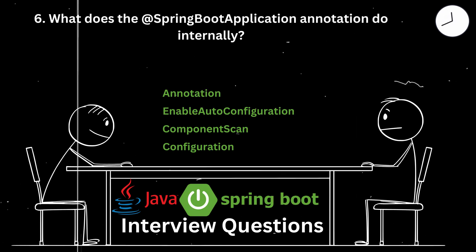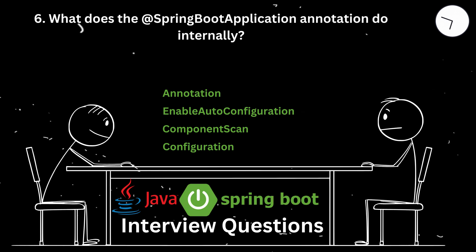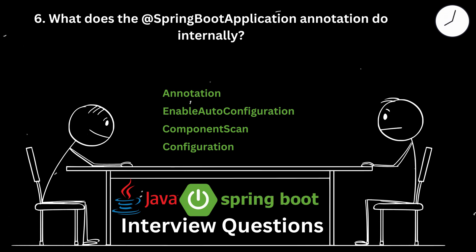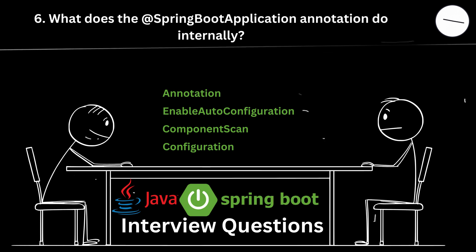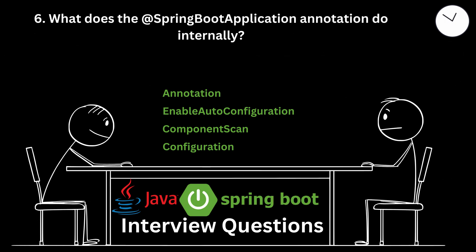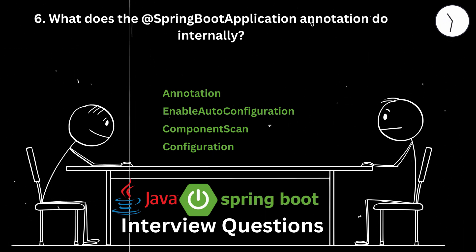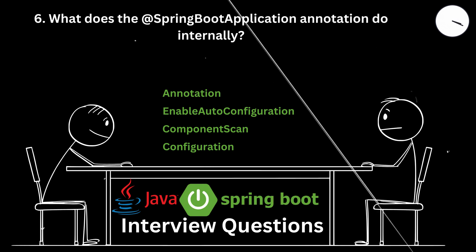What does the @SpringBootApplication annotation do internally? The @SpringBootApplication annotation is a composite annotation that combines @EnableAutoConfiguration, which enables Spring Boot's auto-configuration mechanism. In a library management system, this automatically configured Spring components based on the included JARs.